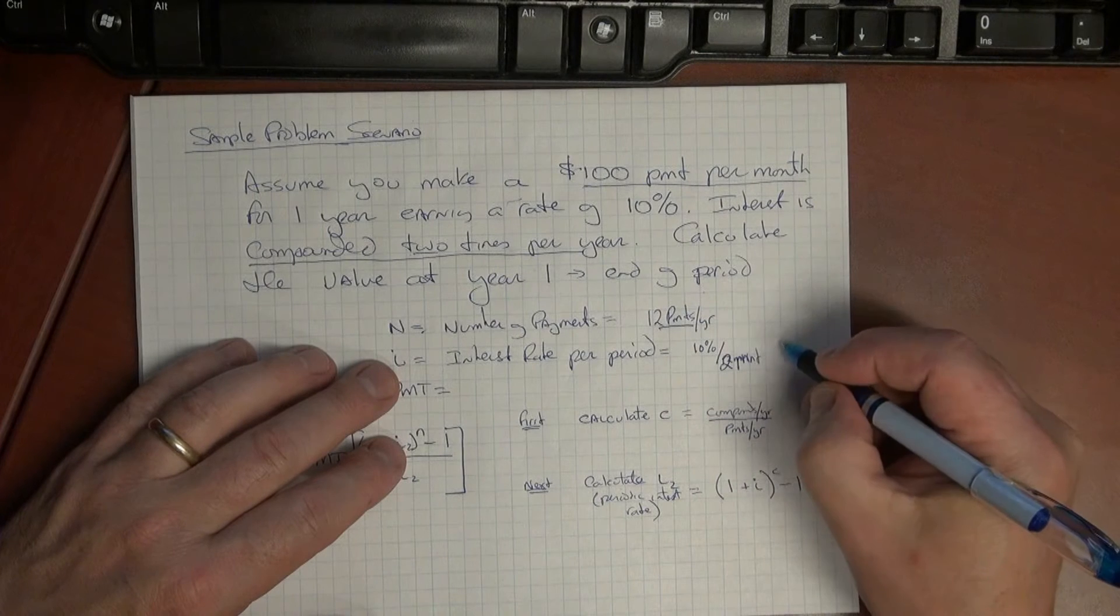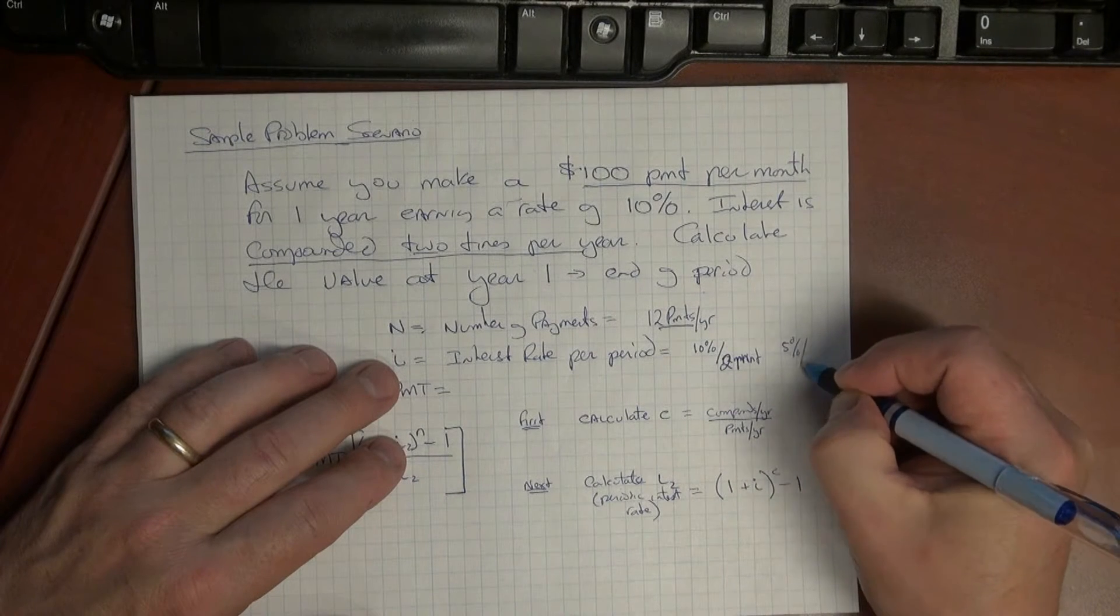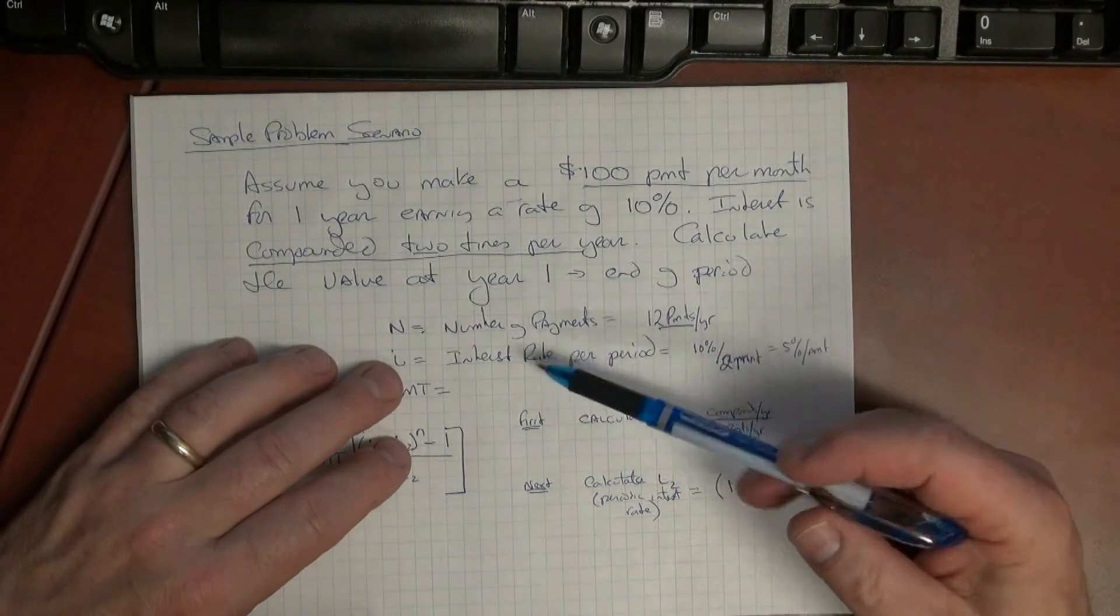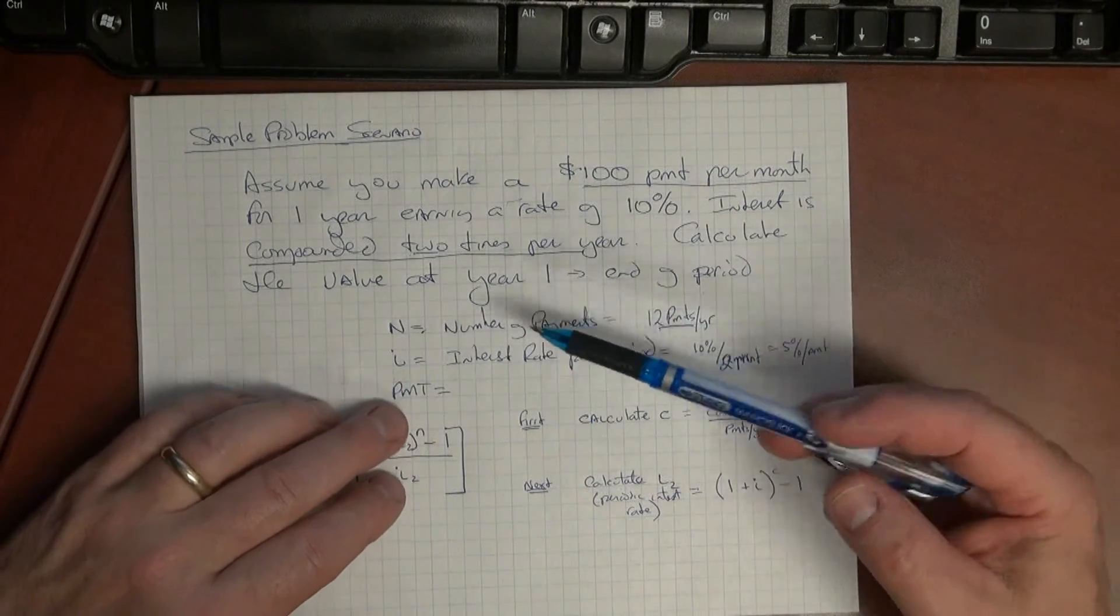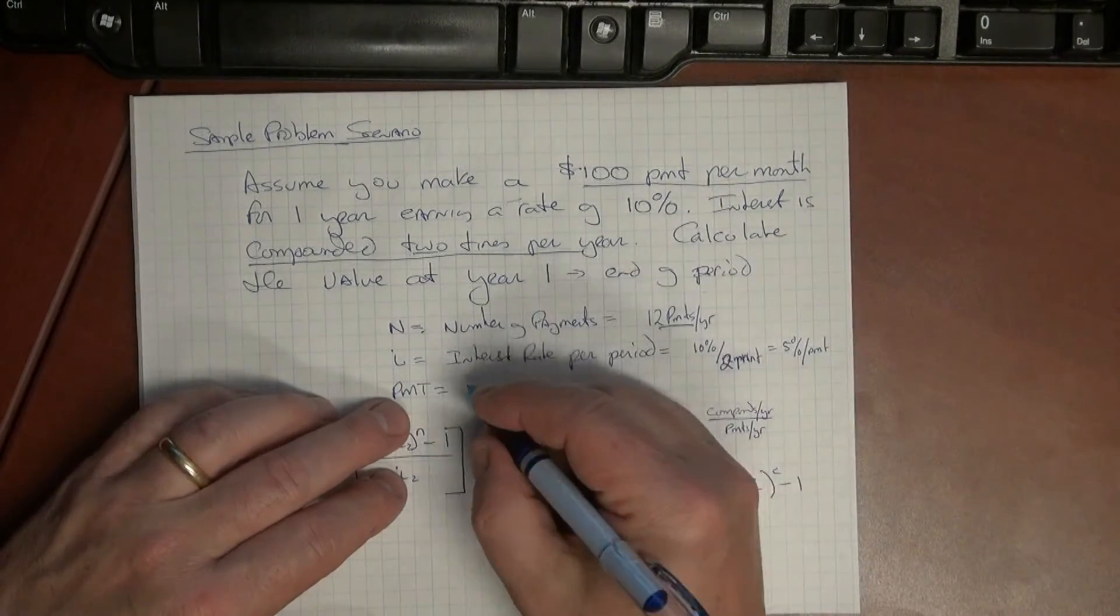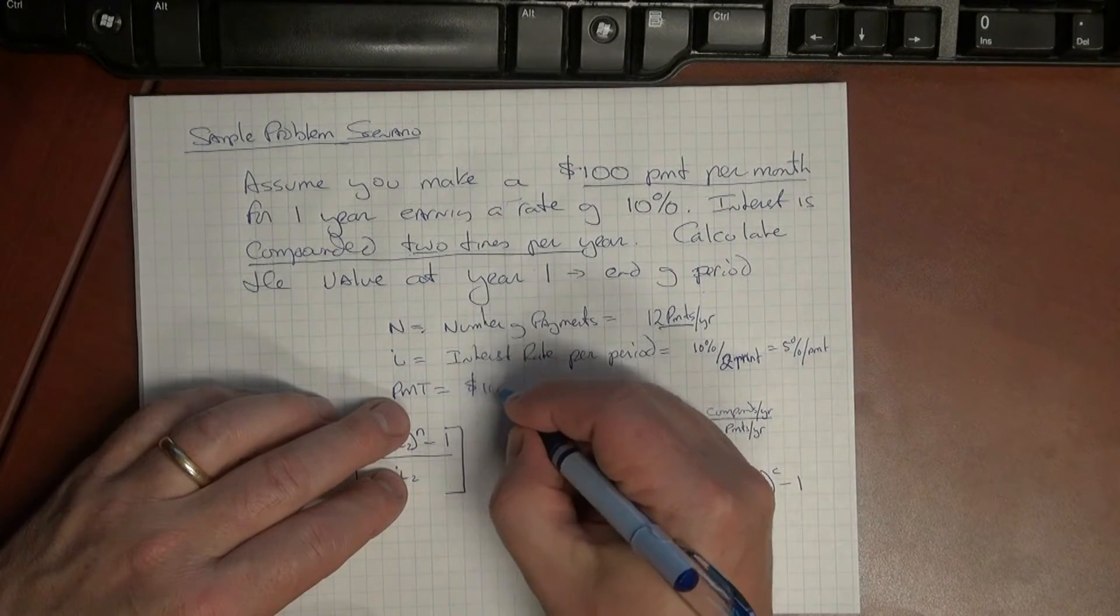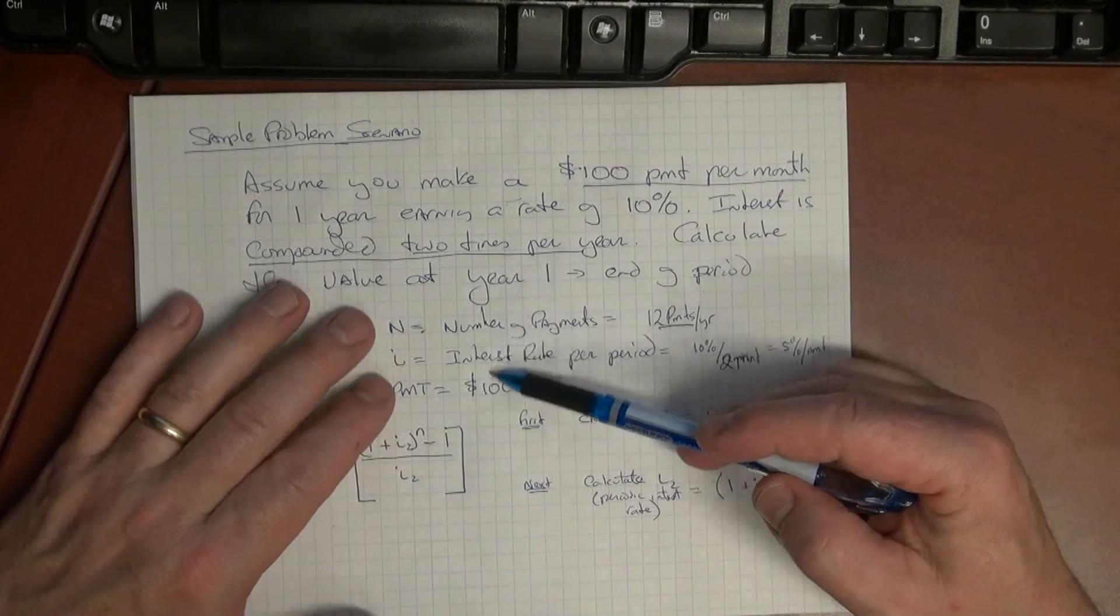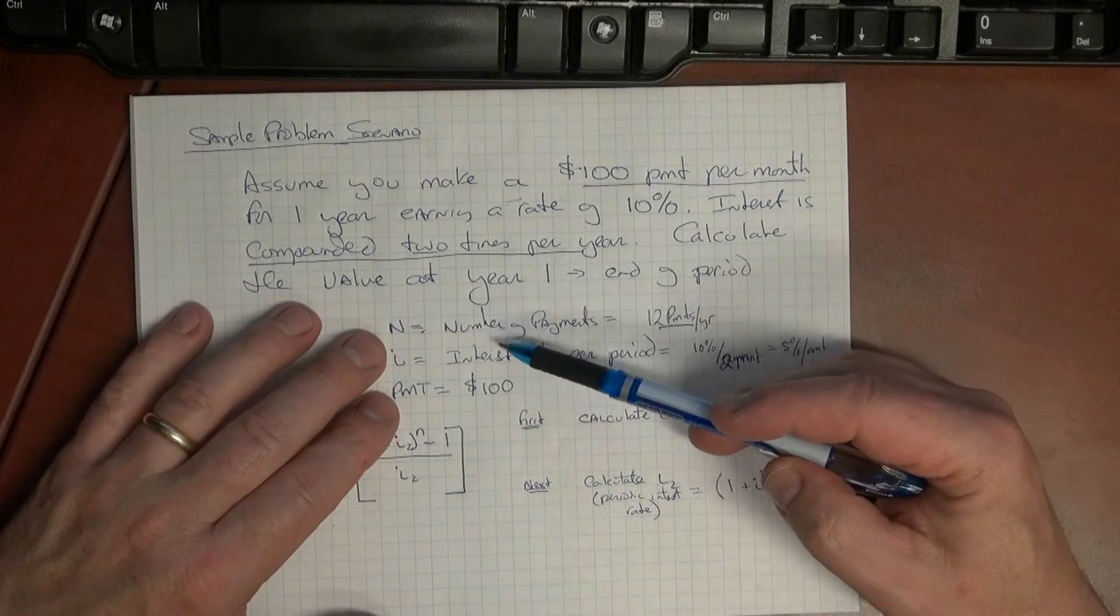Okay so i is five percent per payment. And the payment we know is one hundred dollars. So that's that basic bit of information we need to pull out of these problems, these three things.